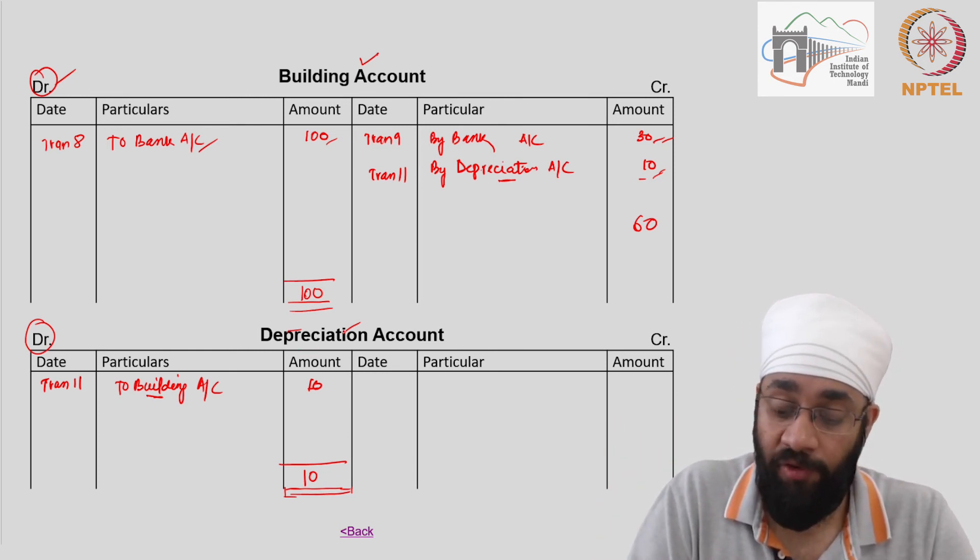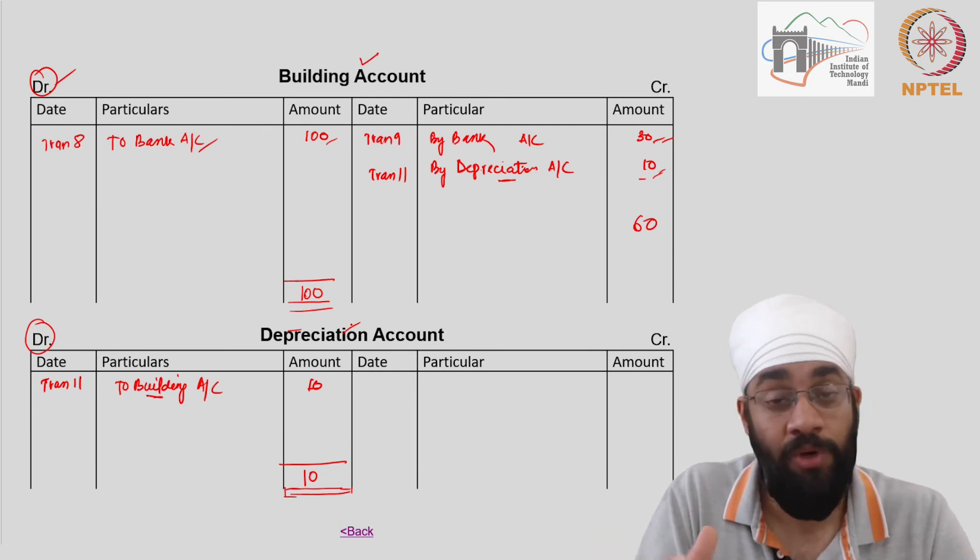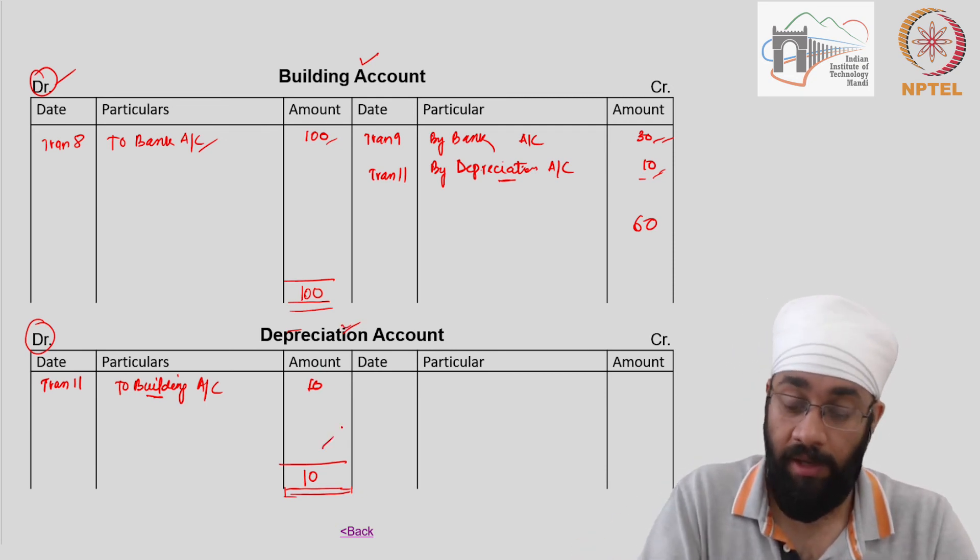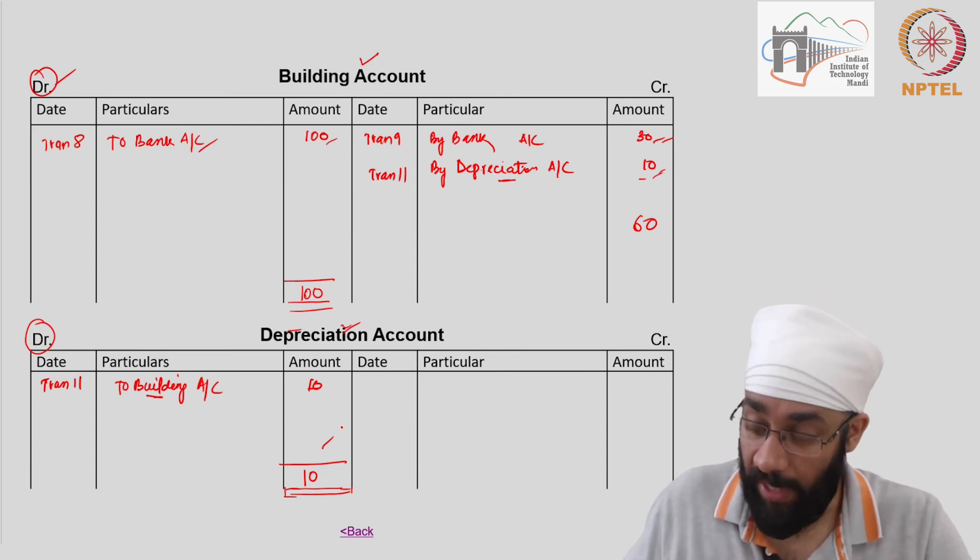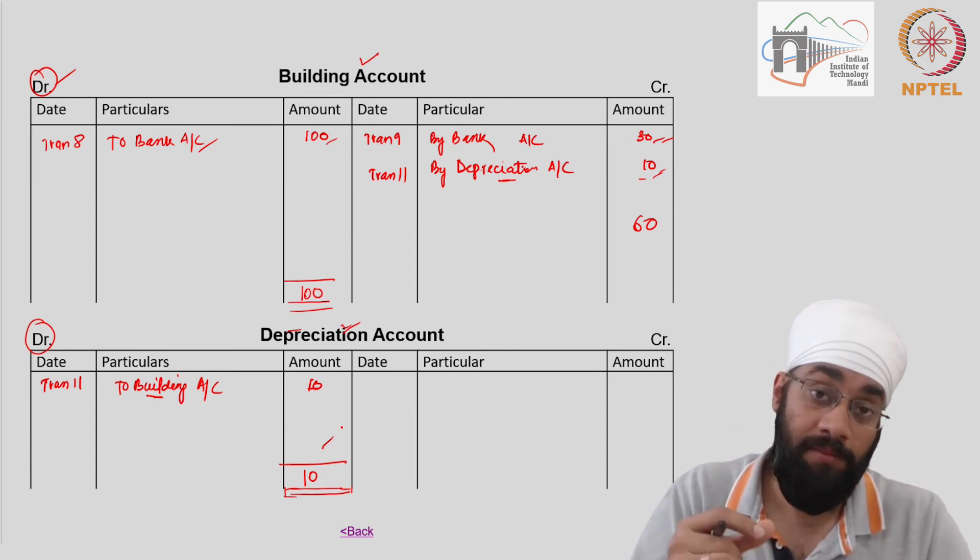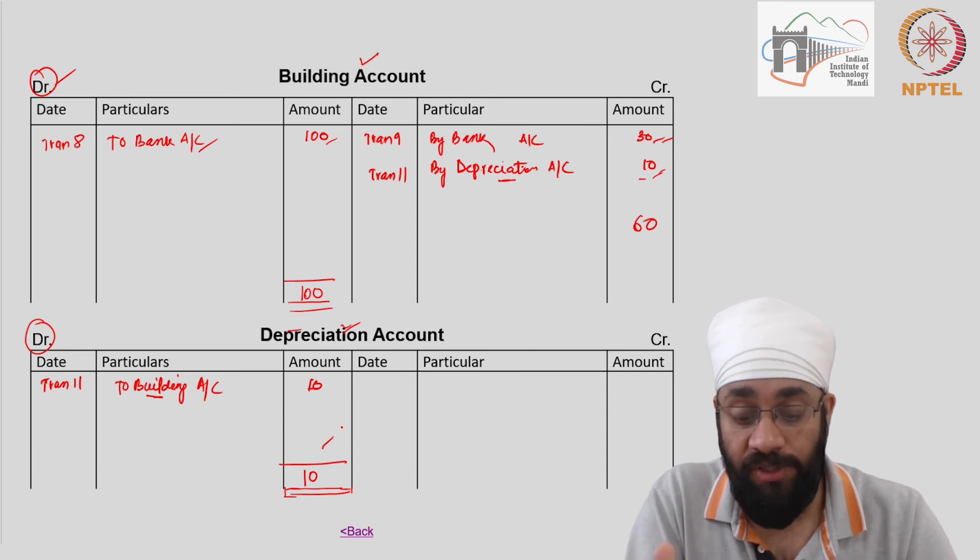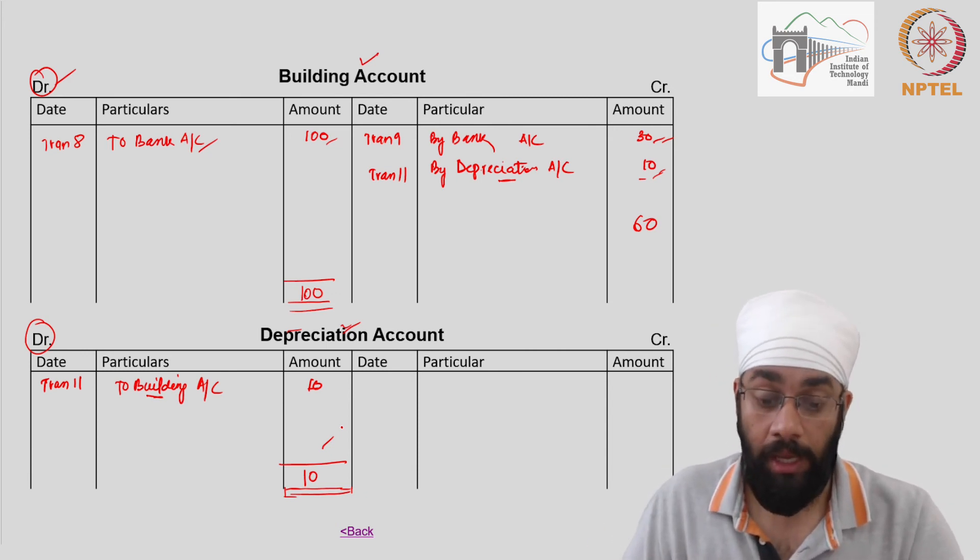So right now if you have to prepare the income statement and you have to say okay what are my depreciation expenses, you go to this account and you say 10 and you are done. And there can be multiple types of assets, so depreciation could be clubbed under one account.